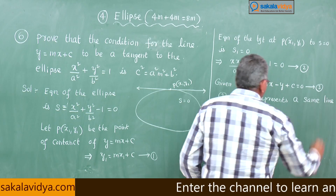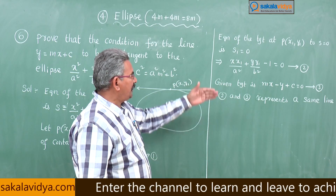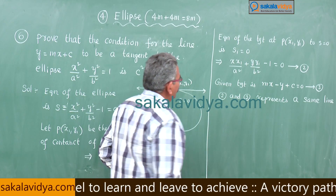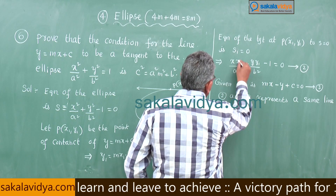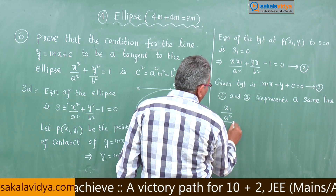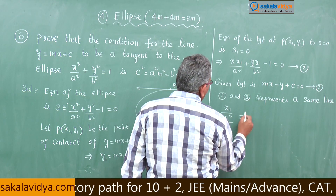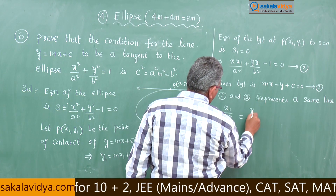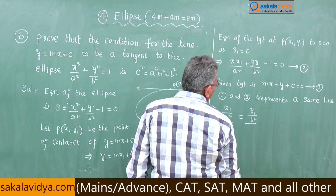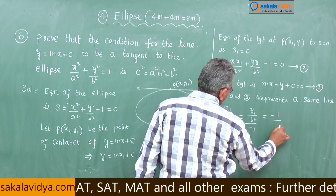Since they represent the same line, their coefficients are in proportion: a₁/a₂ = b₁/b₂ = c₁/c₂. That means (x₁/a²)/m = (y₁/b²)/(−1) = (−1)/c.